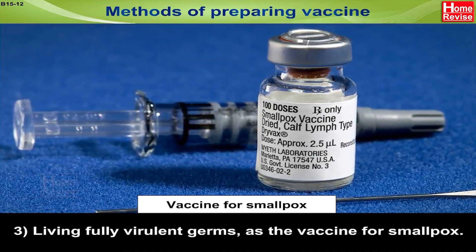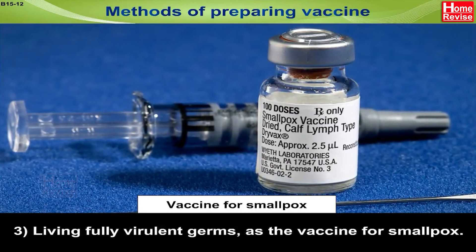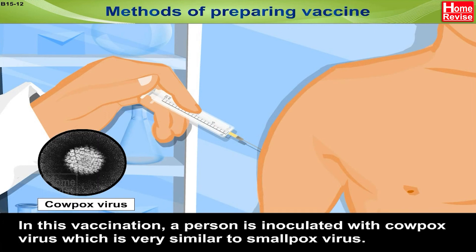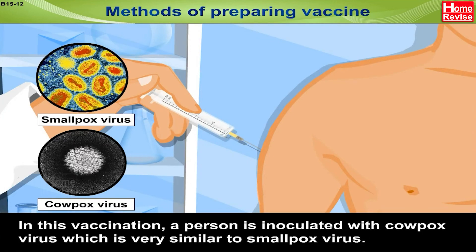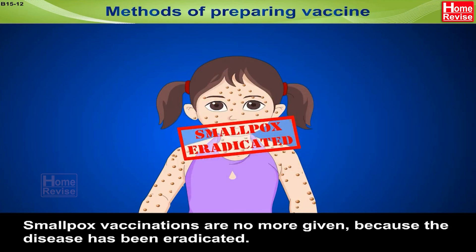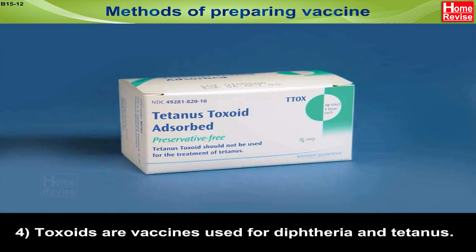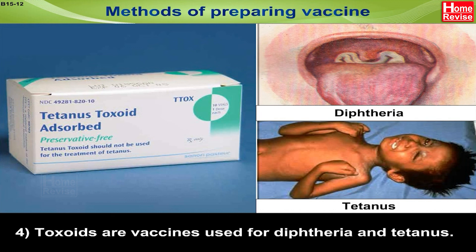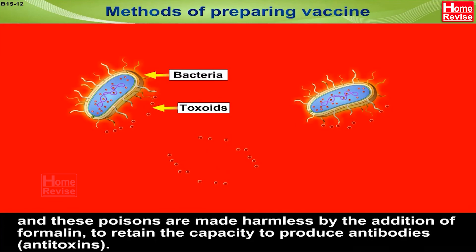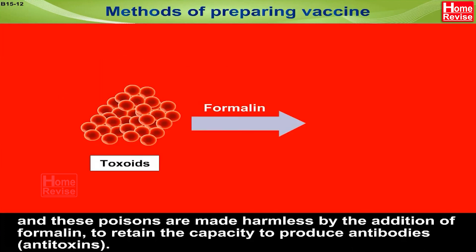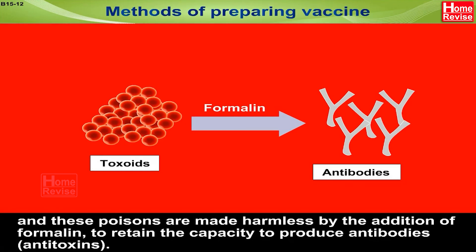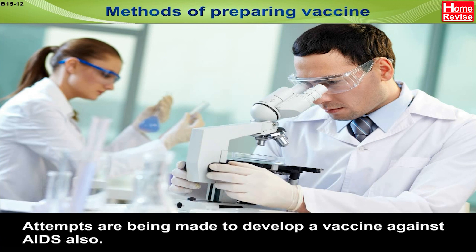Number three — living fully virulent germs: as in the vaccine for smallpox. In this vaccination, a person is inoculated with cowpox virus, which is very similar to smallpox virus. Smallpox vaccinations are no longer given because the disease has been eradicated. Number four — toxoids: these are vaccines used for diphtheria and tetanus. Toxoids are extracts from toxins secreted by bacteria, and these poisons are made harmless by the addition of formalin, yet retain the capacity to produce antibodies, that is antitoxins. Attempts are also being made to develop a vaccine against AIDS.